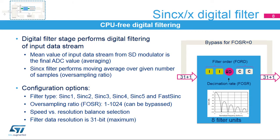The digital filter averages the 1-bit input data stream from the sigma-delta modulator into a higher resolution output, but with a slower data output. The digital filter is a sinc-x type with an order from 1 to 5. A fast sinc-type filter is also available for selection. The oversampling ratio means how many samples will be averaged in a single filter run.